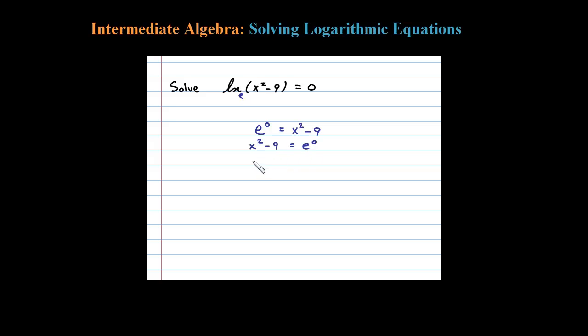Now just solve like normal. x squared minus 9 equals, well, e to the 0 is 1. And then adding 9, we'll have x squared equals 10.